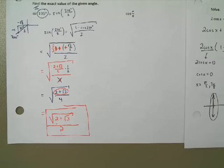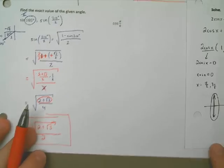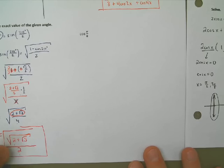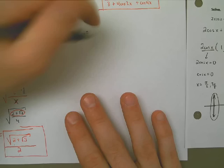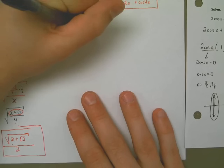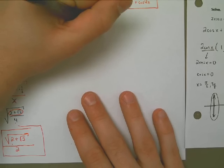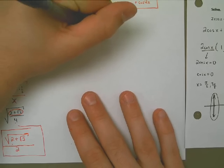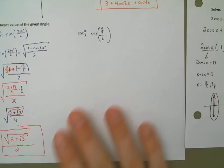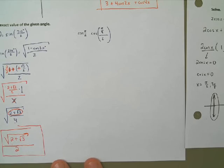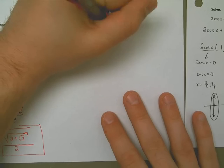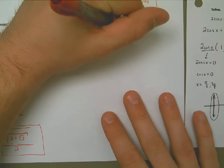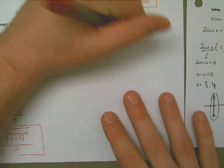Now let's look at cosine of pi over 8. I can do this a number of ways, but what I know is that's the cosine of pi over 4 divided by 2 — half of a fourth. Pi over 4 is 45 degrees, so we're thinking cosine of 45 degrees divided by 2. In other words, pi over 8 is 22.5 degrees, and that's in the first quadrant, so the cosine is going to be positive.